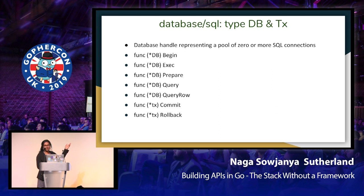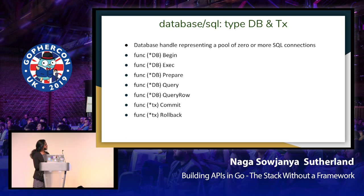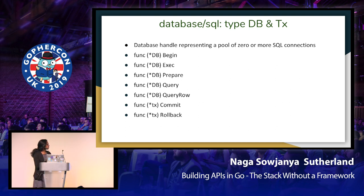Begin is used for database transactions — it starts a transaction and returns it, on which you can call Commit or Rollback. Exec is mostly used for queries that make a state change: create, update, or delete — and Exec never returns any rows. With Prepare, you can prepare a SQL statement and execute it later. Query is used with a typical SELECT statement and returns multiple rows back. And QueryRow returns only one row.